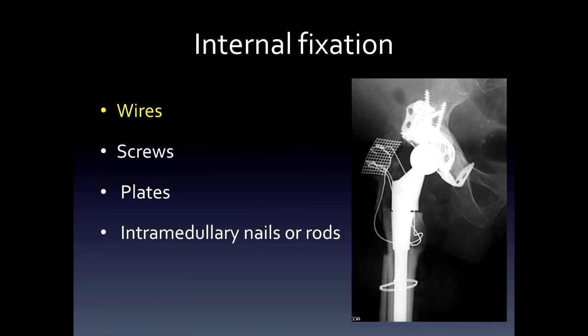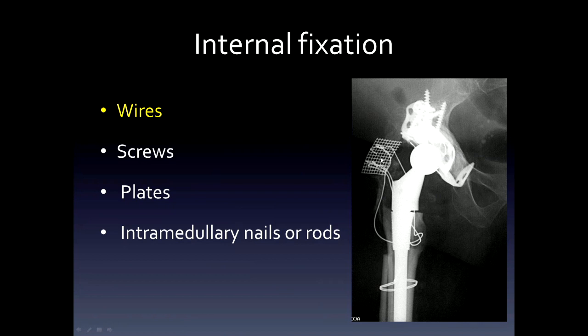Internal fixation includes these basic four types: wires, screws, plates, and intramedullary nails or rods. In this example on the right, you can see wires used to attach a greater trochanter and the adjacent soft tissues through a mesh to bone.